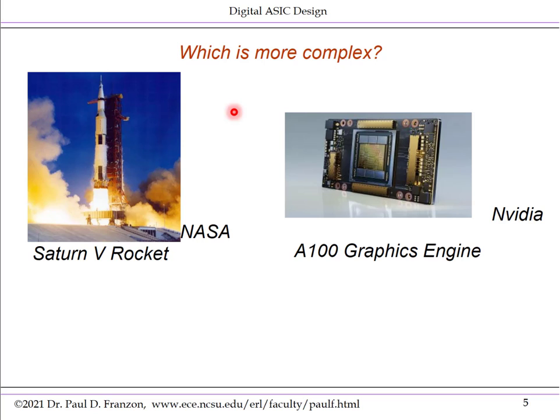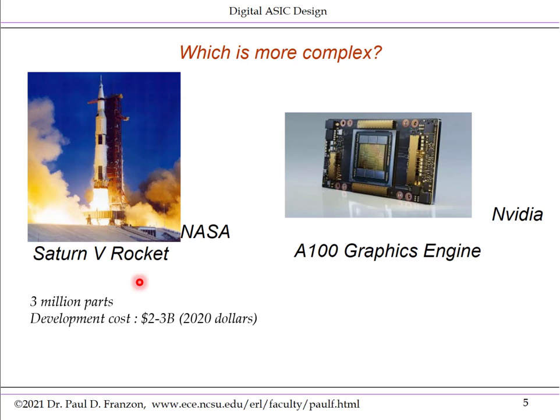Let's compare two of mankind's crowning achievements: the Saturn V rocket, which took man to the moon in the 1960s and 70s, and the A100 graphics engine — a high-end engine actually intended for AI and blockchain applications from NVIDIA. The question is: which is more complex? The Saturn V rocket has 3 million parts and had a development cost in today's dollars of 2 to 3 billion.